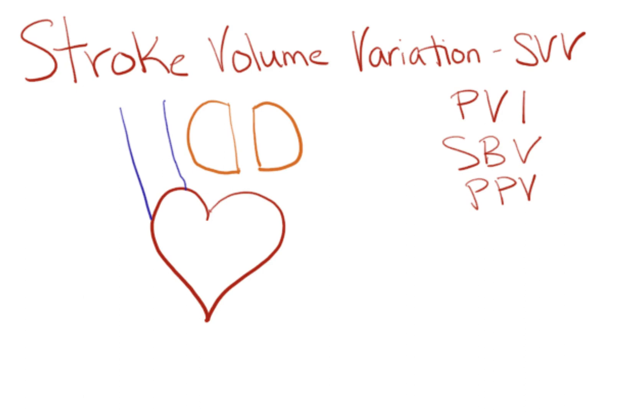So stroke volume variation is what we're going to talk about, and that talks about an art line waveform, but this can also be translated to pleth variability index, which is your pulse ox, or systolic blood pressure variation, so how does your systolic blood pressure vary based on your fluid status, or pulse pressure variation, which looks at how does your systolic and diastolic vary in relation to each other in reference to your fluid status.